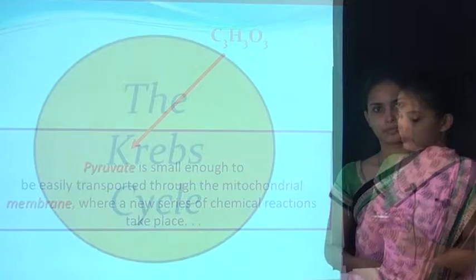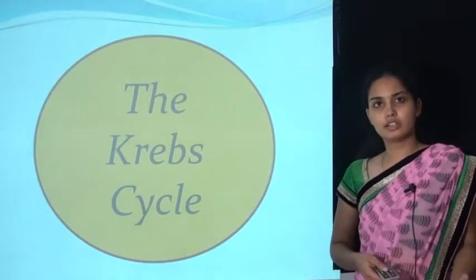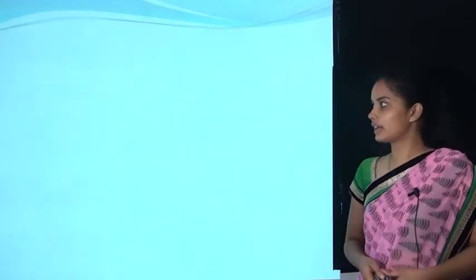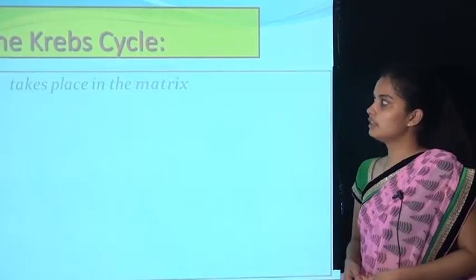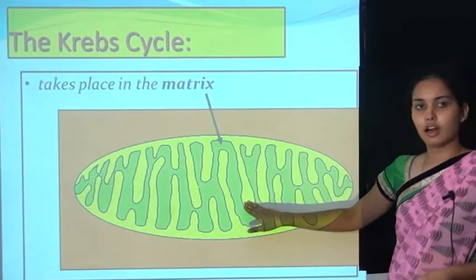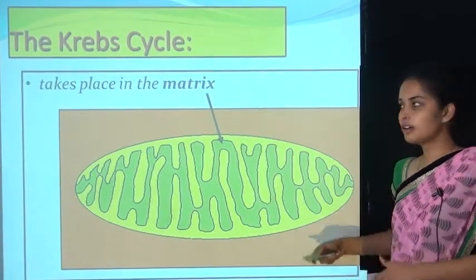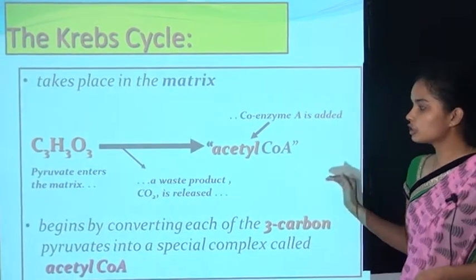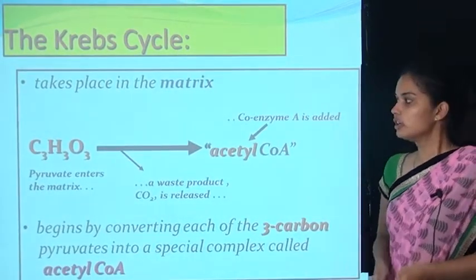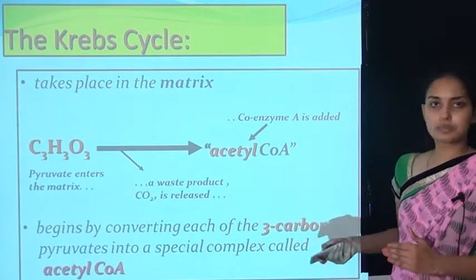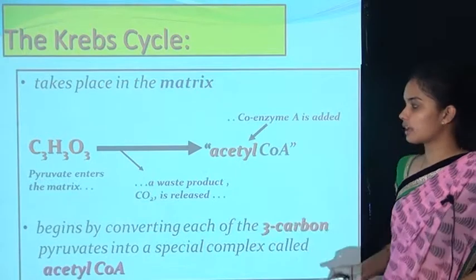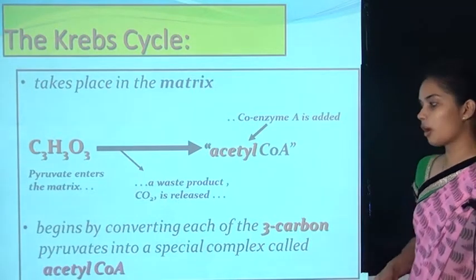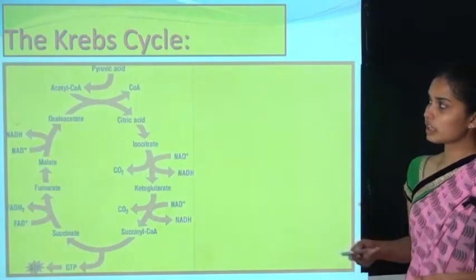From glycolysis we obtained two pyruvate molecules, which enter the Krebs cycle. The Krebs cycle takes place in the matrix of the mitochondria. Pyruvate is a three-carbon compound; it is converted into acetyl-CoA as it enters the matrix, with CO2 released as a byproduct. The cycle begins by converting each three-carbon pyruvate into acetyl-CoA.